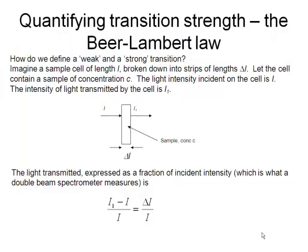So we need some way of quantitatively assessing the strength of a transition. What is the intensity of the electronic absorption? And we do that with something called the Beer-Lambert law.